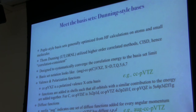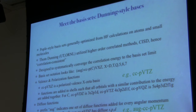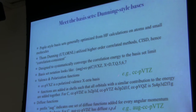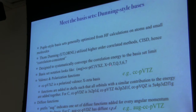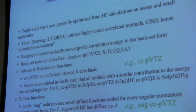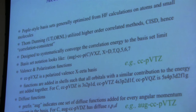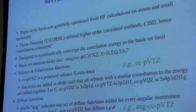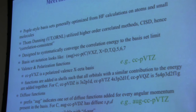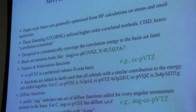More importantly, Dunning basis sets were designed to systematically converge to the basis set limit. They look like cc-pVXZ, where X = D for double-zeta, T for triple-zeta, and so on. These are defined up to 6-zeta regularly, with a few 7- and 8-zeta for specialized uses. Functions are added in shells so all orbitals with similar energy contributions are added together. For carbon: cc-pVDZ is 3s/2p/1d; triple-zeta is 4s/3p/2d/1f; and so on in a very regular pattern. Polarization functions are built in — no extra tacking on required.